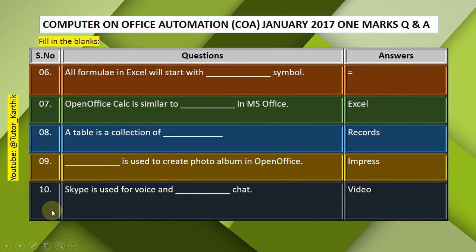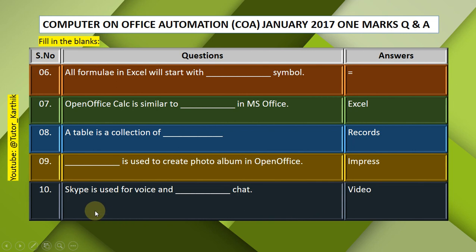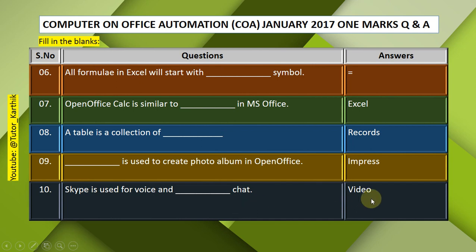Question 9: — is used to create a photo album in OpenOffice. Question 10: Skype is used for voice and — chat. Answer: Video. Skype is used for voice and video chat.